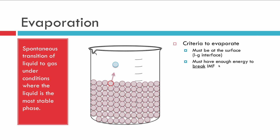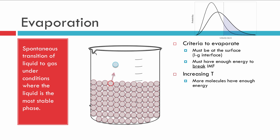What would happen if we were to increase the temperature? The solid line here represents the higher temperature and the dotted line represents the lower temperature. We have the same minimum energy to break our intermolecular forces as before. However, at the higher temperature there's a larger area under the curve, meaning there's a higher probability of molecules having this minimum energy. That means more molecules in the entire container have enough energy to break the intermolecular forces, so more molecules at the surface will also have enough energy, and more will evaporate.